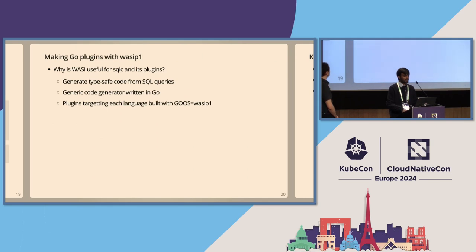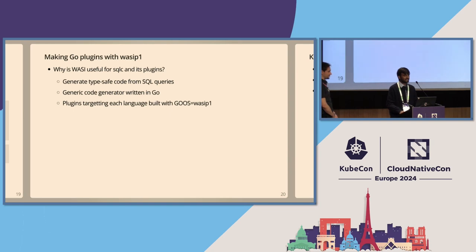Let me talk about the use cases of WASI P1. There are many applications, and I selected this one because it highlights the plugin model of WebAssembly. WASI is currently primarily useful for writing plugins in any language that can compile to WASI, then executed in any language using WebAssembly virtual machines. There is a project called SQLC, which generates typed code from SQL. In this project, they need different plugins to make things happen — like sqlc-gen-go, sqlc-gen-python, sqlc-gen-kotlin, and so on.